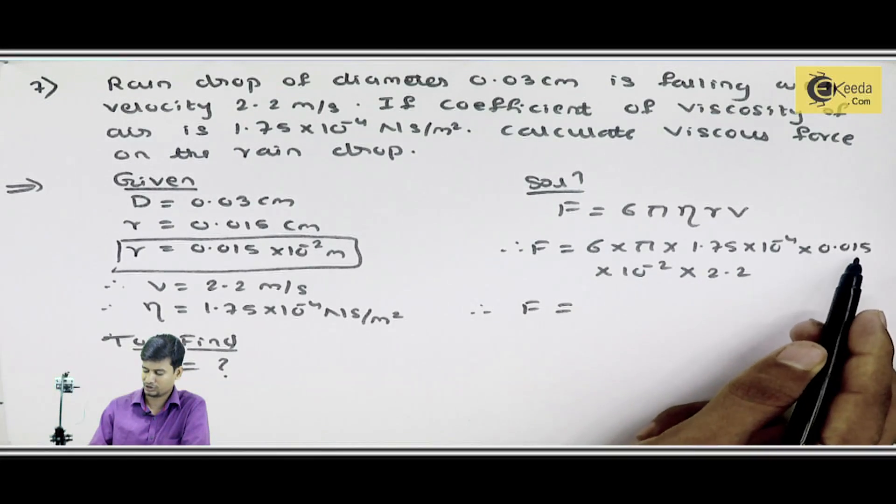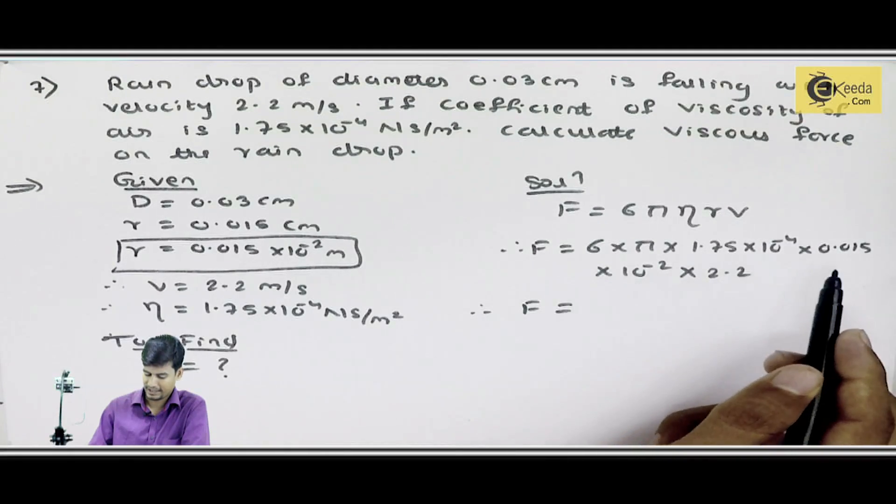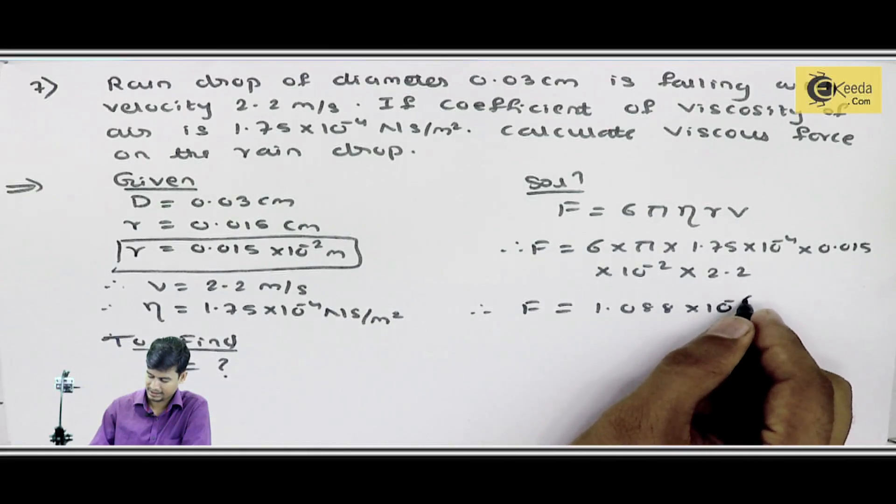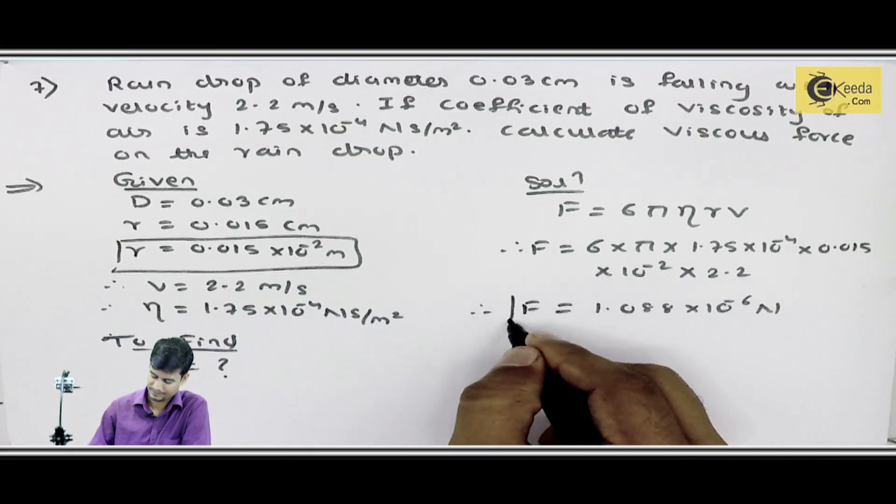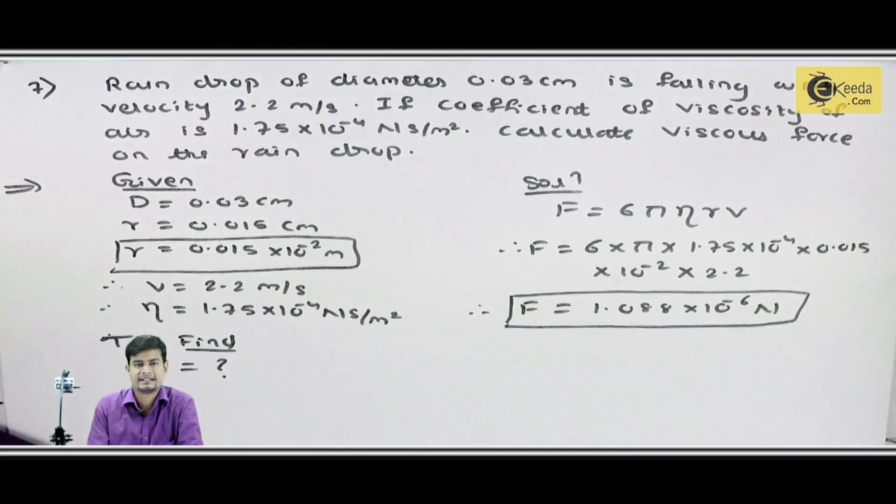Toh, finally answer calculate hoke, mujhe mullega 1.088 into 10 raise to power minus 6 newton. Thick hai? Toh, mujhe final answer mullega force ka. Iska indar mujhe simple, sabkush given terms thay. Toh, mujhe substitution karke value find out kari hai.